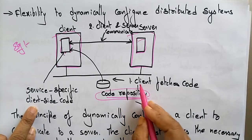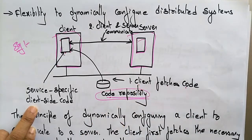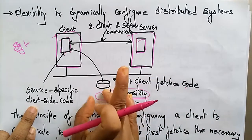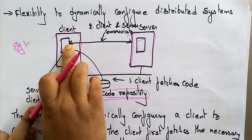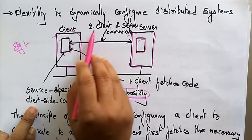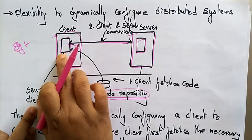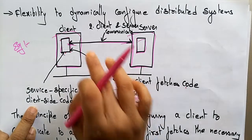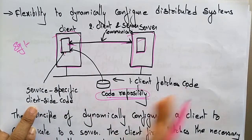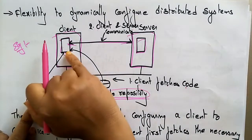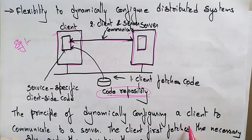The client fetches the code from the code repository — from some storage device — and that code is migrated from the repository to the client machine. After that, client-server communication is established. This improves both communication and system performance. This is how code is going to be migrated from one system to another.